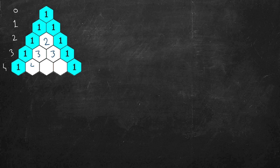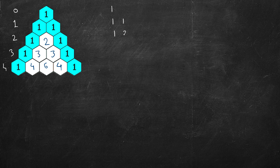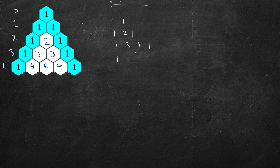A better way to think about this in terms of a program is to write it left-aligned: one, one one, one two one. This is zeroth index, this is index one in the array or list. So: one three three one, one four six four one — and so on.